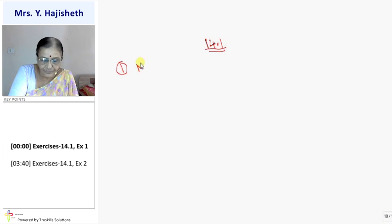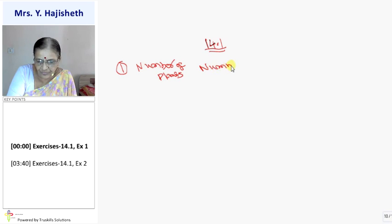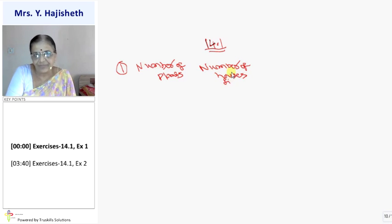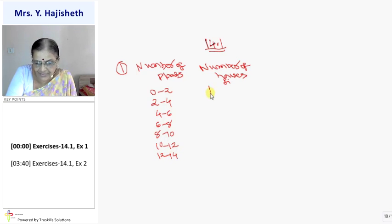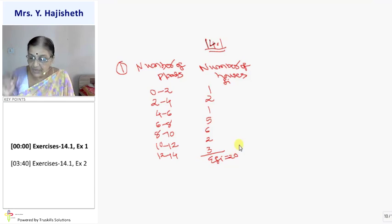First sum is, you are given number of plants. Then you are given number of houses, that is equal to FI, clear? Now, your data is given as 0 to 2, 2 to 4, 4 to 6, 6 to 8, 8 to 10, 10 to 12, 12 to 14. And frequencies are given 1, 2, 1, 5, 6, 2 and 3. Sigma FI is you are getting 20.